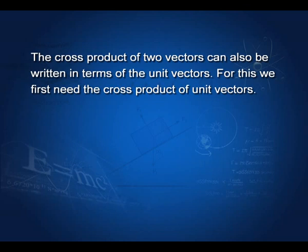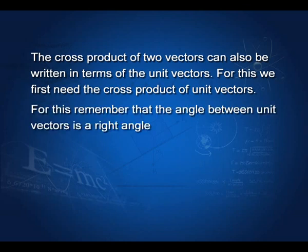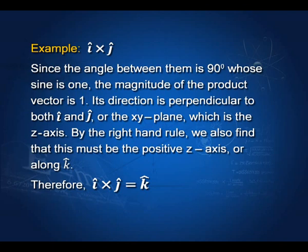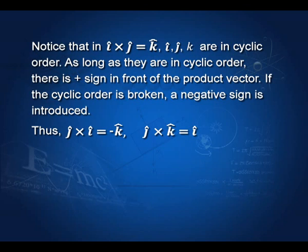The cross product of two vectors can also be written in terms of unit vectors. We first need the cross products of the unit vectors themselves. Remember that the angle between unit vectors is a right angle — the angle between i-cap and j-cap is 90 degrees, and between j-cap and k-cap is also 90 degrees. Therefore, i-cap cross j-cap equals k-cap, because the product must be perpendicular to both i and j, which is the z direction. Using similar logic: j-cap cross i-cap equals minus k-cap, j-cap cross k-cap equals i-cap, k-cap cross i-cap equals j-cap, and i-cap cross k-cap equals minus j-cap.